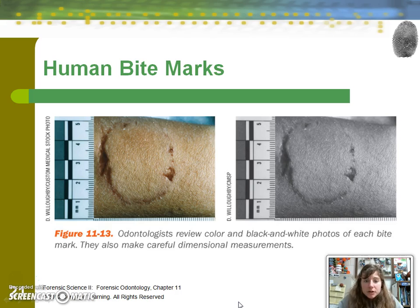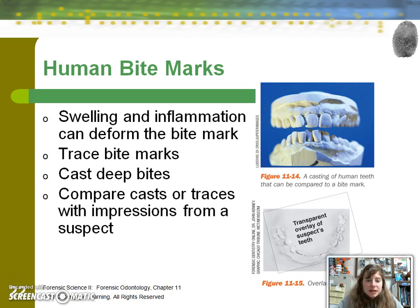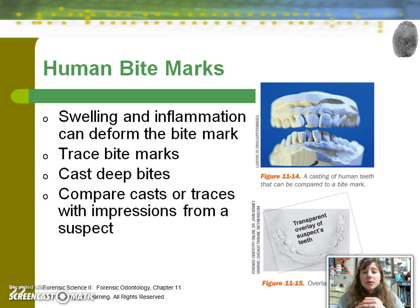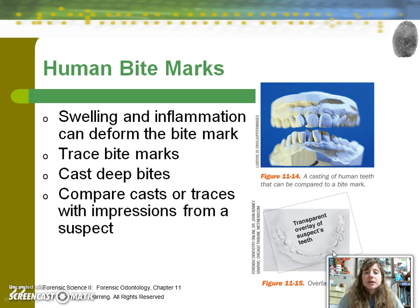Different lighting can be used to evaluate contrasts on bite marks. One thing that can be done is to actually make a cast of the bite mark impression. This involves taking the skin or food item and pouring in a dental stone, which will solidify and preserve the bite mark. Another way to evaluate bite mark analysis is to do a transparent overlay — you can actually place the dentition over the bite mark picture and compare.